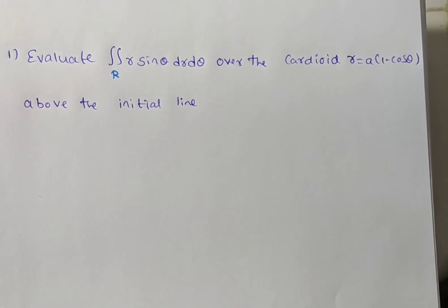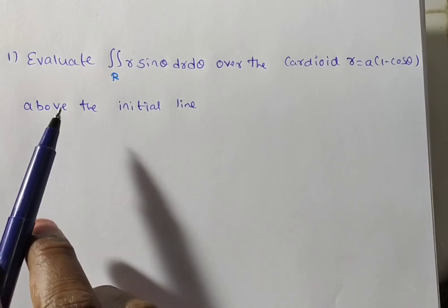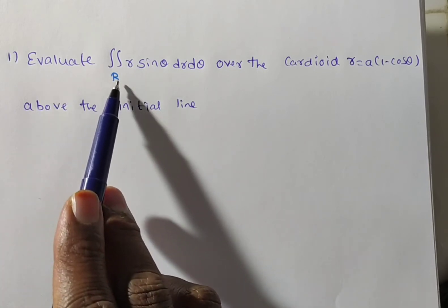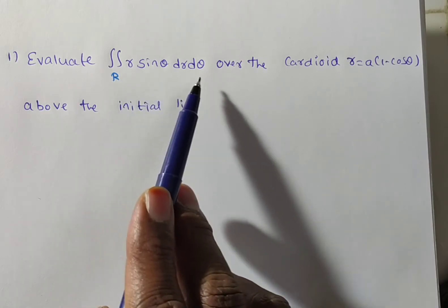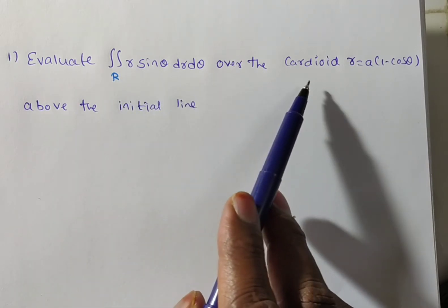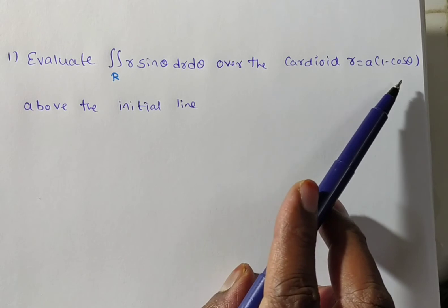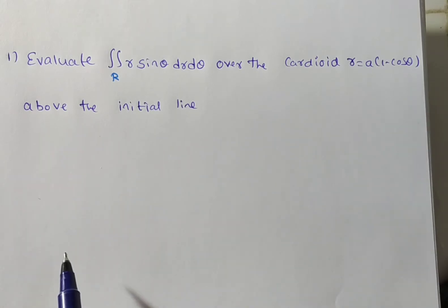Friends, now we are solving a problem on multiple integrals. The given problem is: evaluate the double integral of r sin θ dr dθ over the cardioid r = a(1 - cos θ) above the initial line.